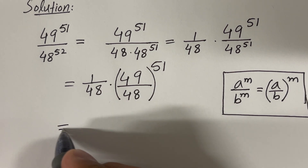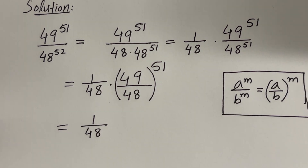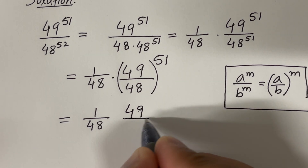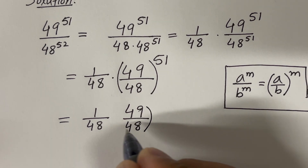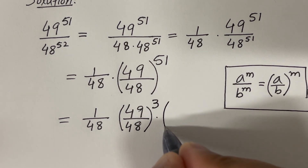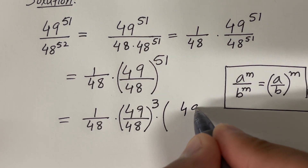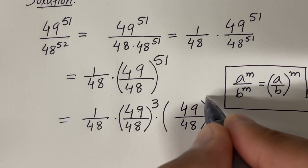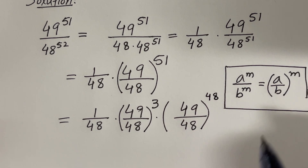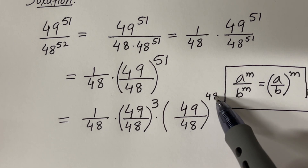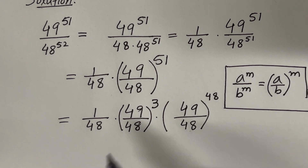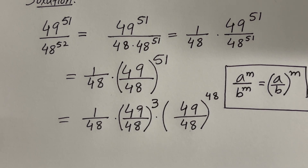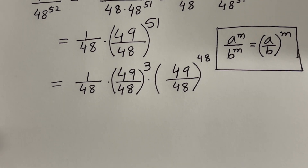I can further simplify: 1 over 48, times (49/48) raised to the power 3, times (49/48) raised to the power 48. I just split the exponent 51 as 3 plus 48.